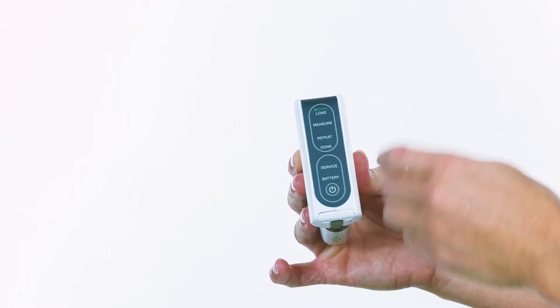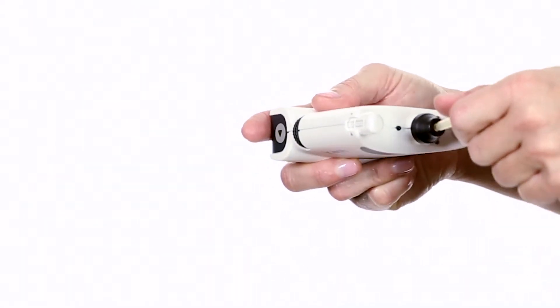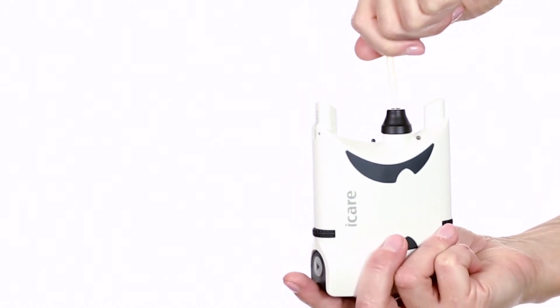Turn the device onto its side. Remove the cap from the probe container. Align the probe with the probe base. Point the device upward and remove the probe container.